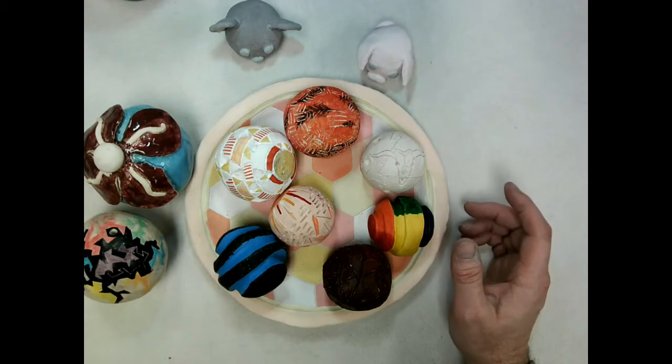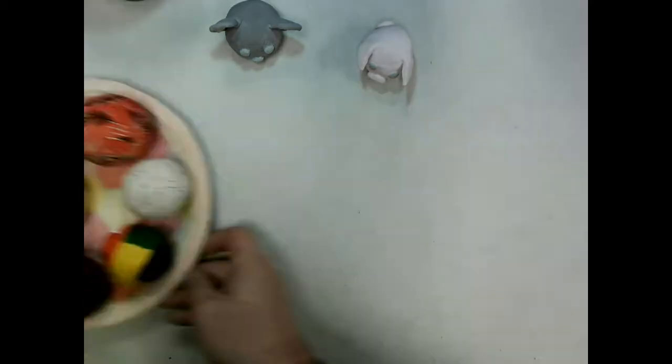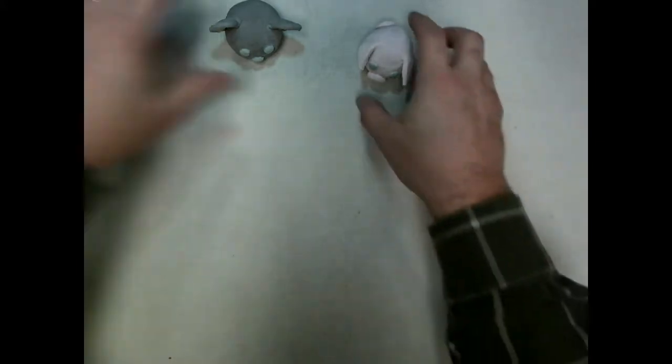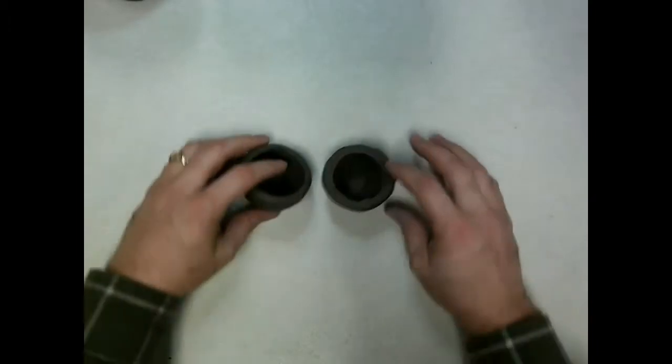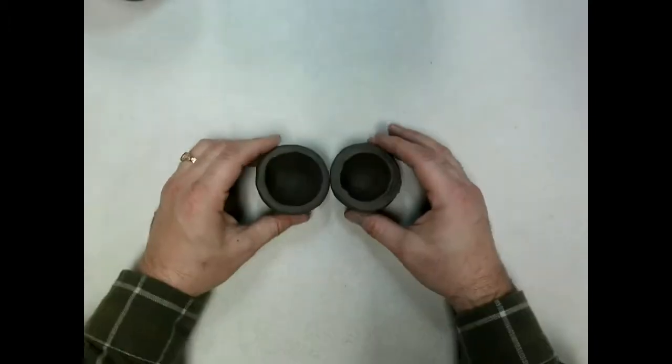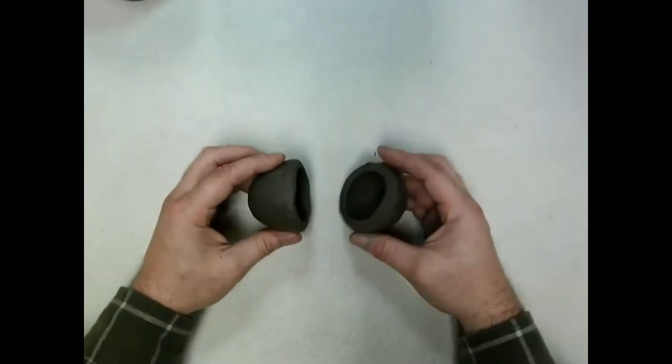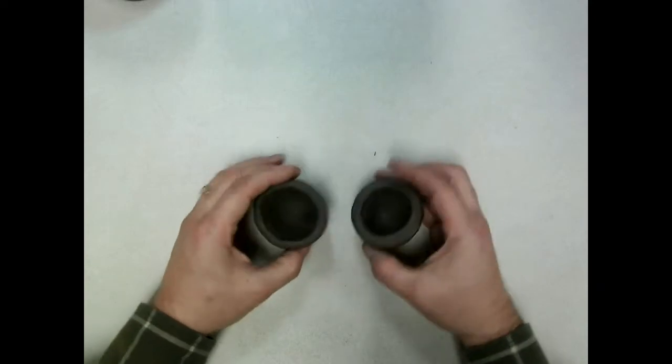But in order to make them, you're going to start out with two pinch pots. You've already made pinch pots before. You know how to make pinch pots. So you're going to make two smaller little pinch pots like you see here. We're going to take these two pinch pots and we're going to put rattles inside and then we're going to put them together.